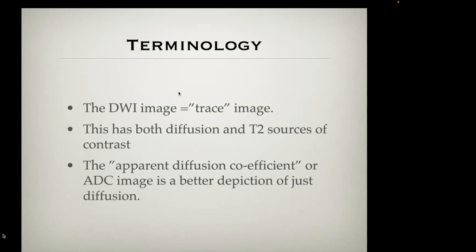Regarding terminology: what people commonly call the DWI image is strictly called the trace image. This image has both diffusion-weighted information and T2 sources of contrast, so it's a mixed image — a composite of diffusion properties and T2 relaxation. For a purer map of diffusion properties, you want to look at the apparent diffusion coefficient or ADC image. When you look at MR scans, you almost always get the trace image along with the ADC map, and I recommend looking at both routinely.